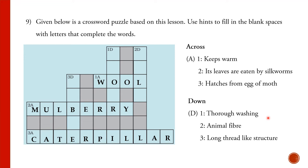For the downward questions: 1 Down — 'thorough washing' — the answer is scouring (written as 'scour'). Scour means cleaning the sheep's wool as soon as it is taken from the sheep. 2 Down — 'animal fiber' — with 'l' as the third letter, the answer is silk. 3 Down — 'long thread-like structure' — the answer is fibre. The crossword puzzle is complete.